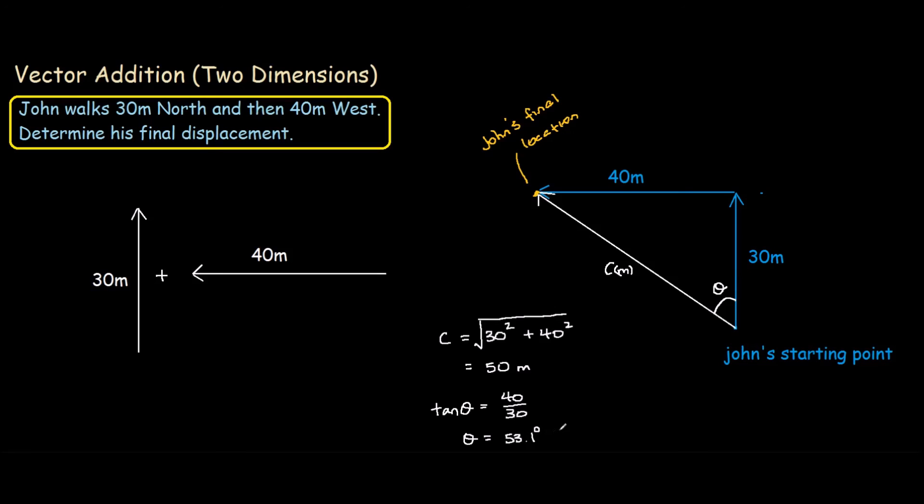But also, we need to have a reference point of where that 53.1 degrees is. So we say it is 53.1 degrees west of north.